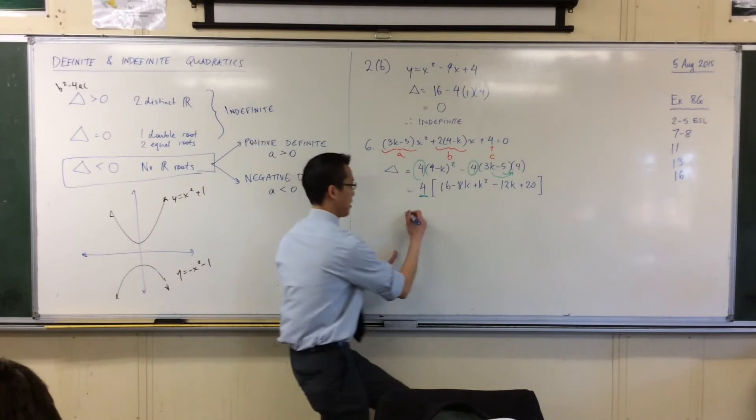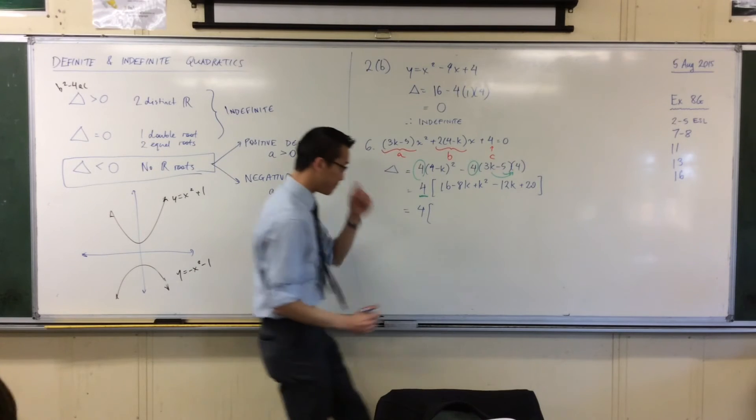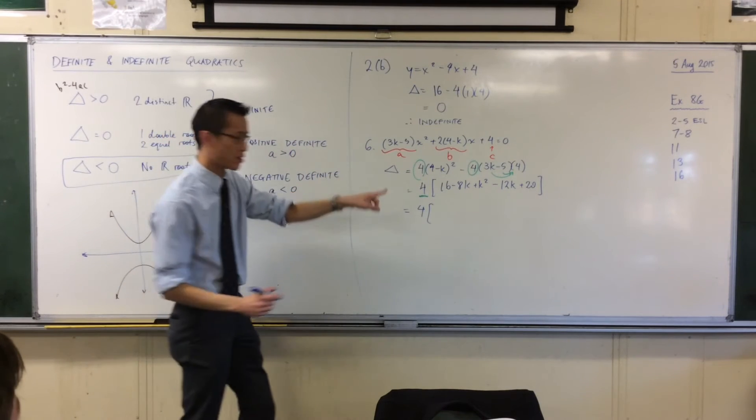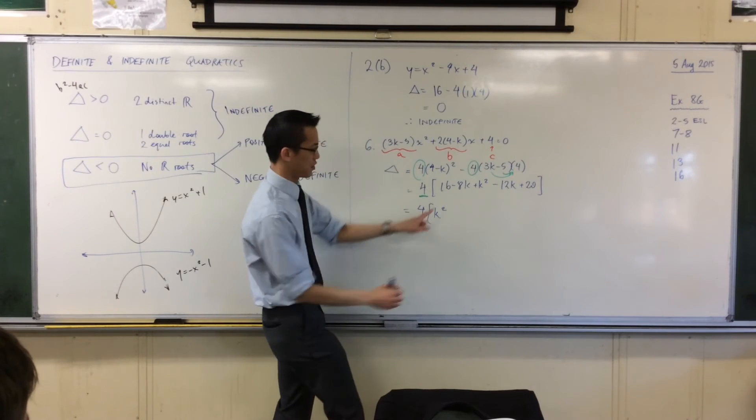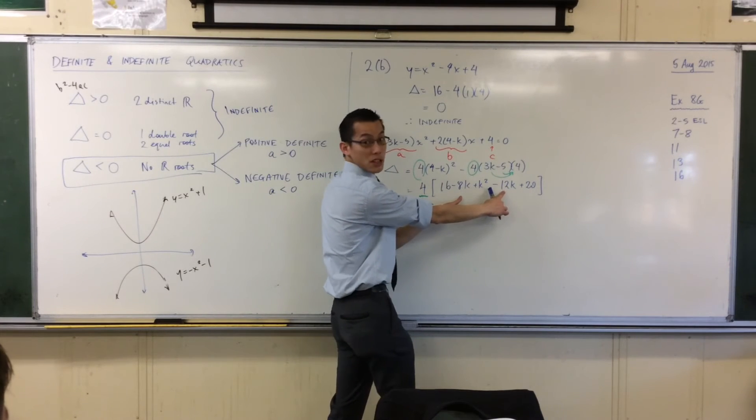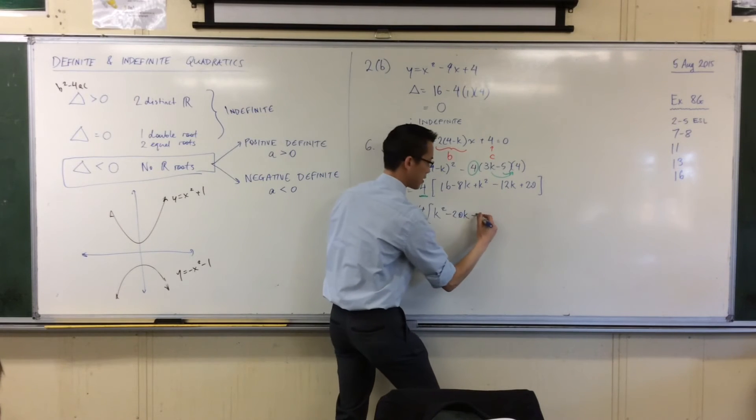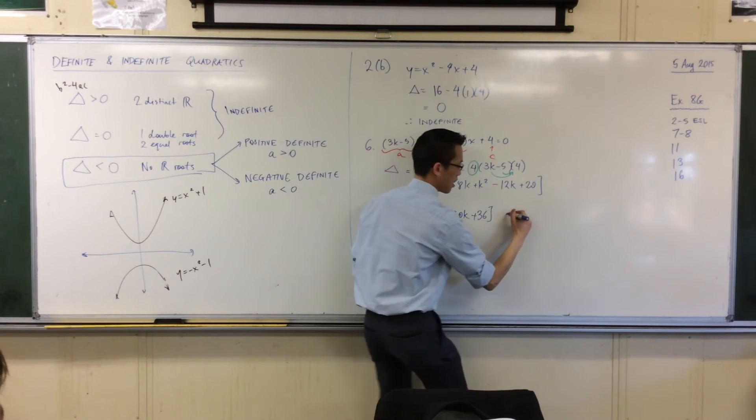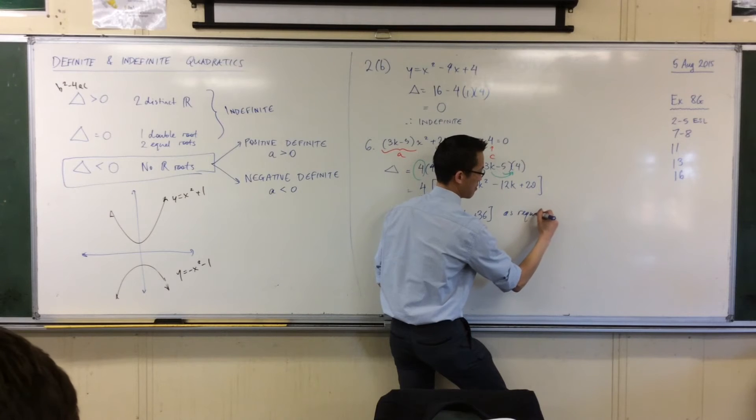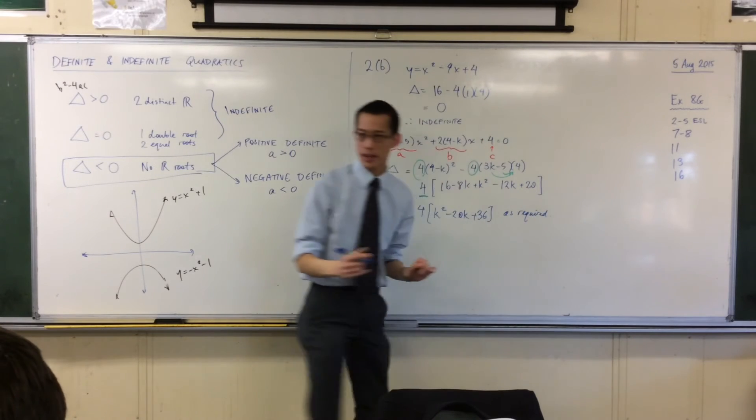Let's simplify, shall we? 4 is still out the front. So, we'll put our squared term out in here. What am I matching terms here? Minus 20k. Minus 20k? Plus 36. Plus 36. Does that match? Yes. So I'm going to say as required. Okay, fantastic.